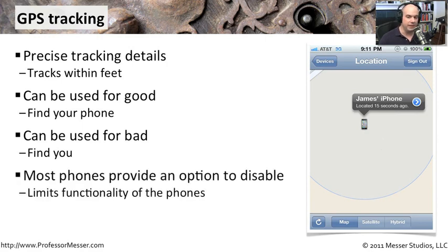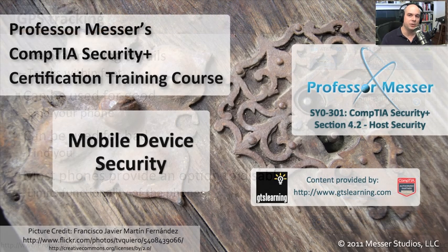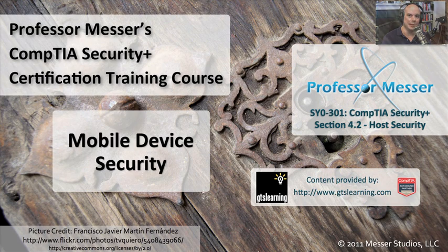Most devices give you the option to disable that GPS functionality, which will limit some functionality of your phone — obviously you can't use GPS navigation if it's turned off. But it also limits the visibility others have into where you are. Our mobile devices are becoming incredibly powerful, and we just need to make sure that we're making them as secure as possible.